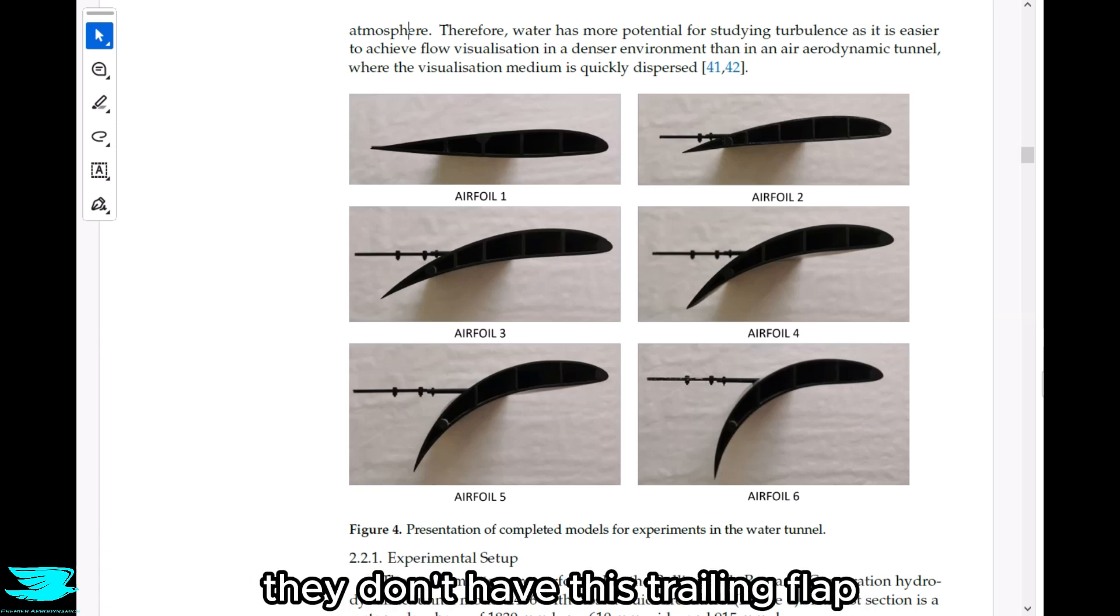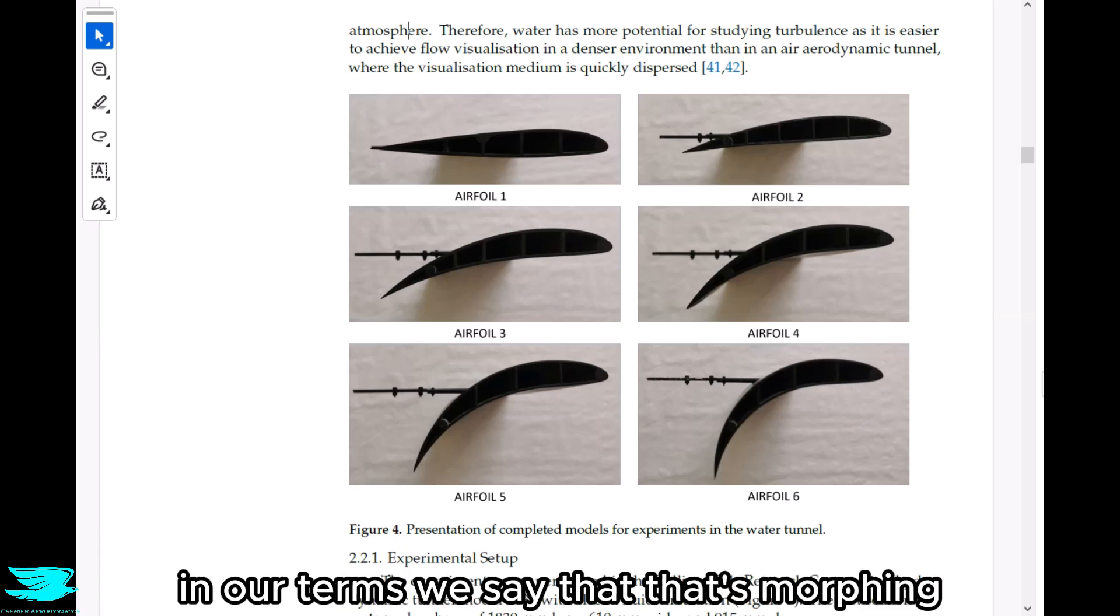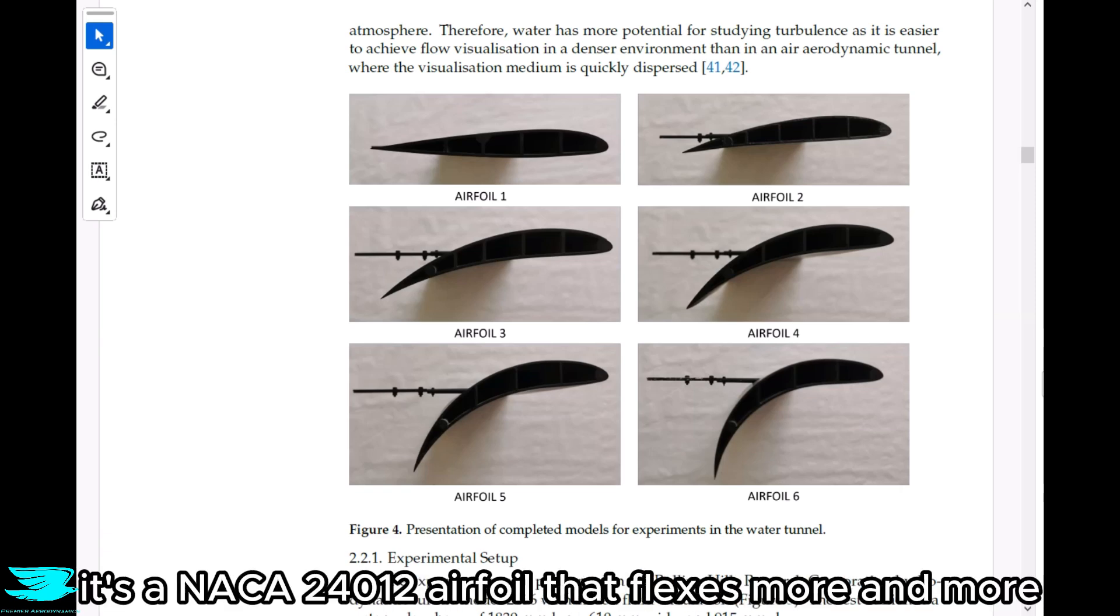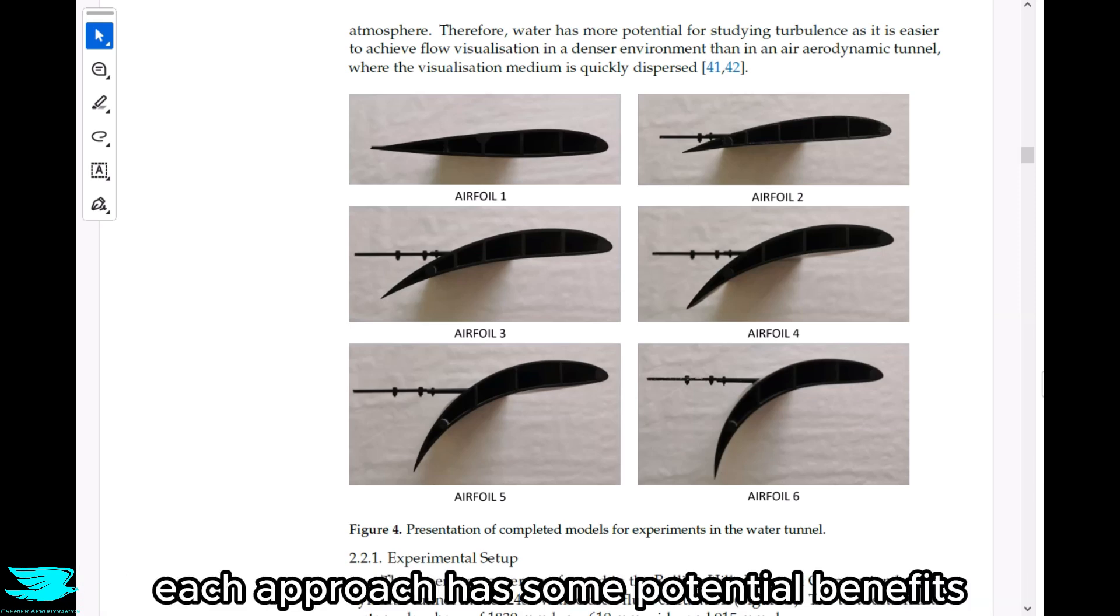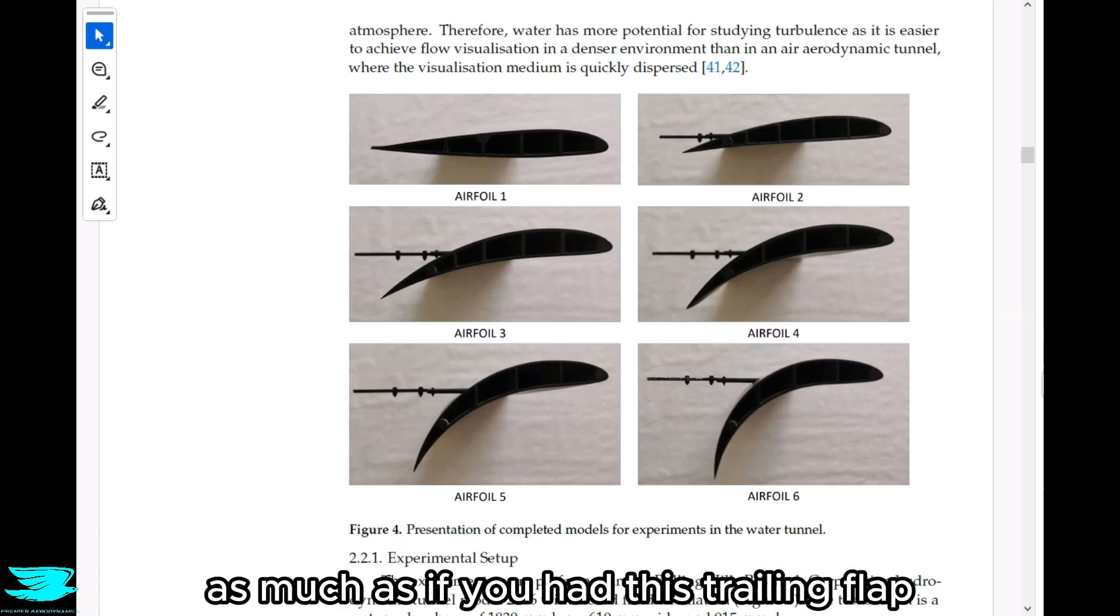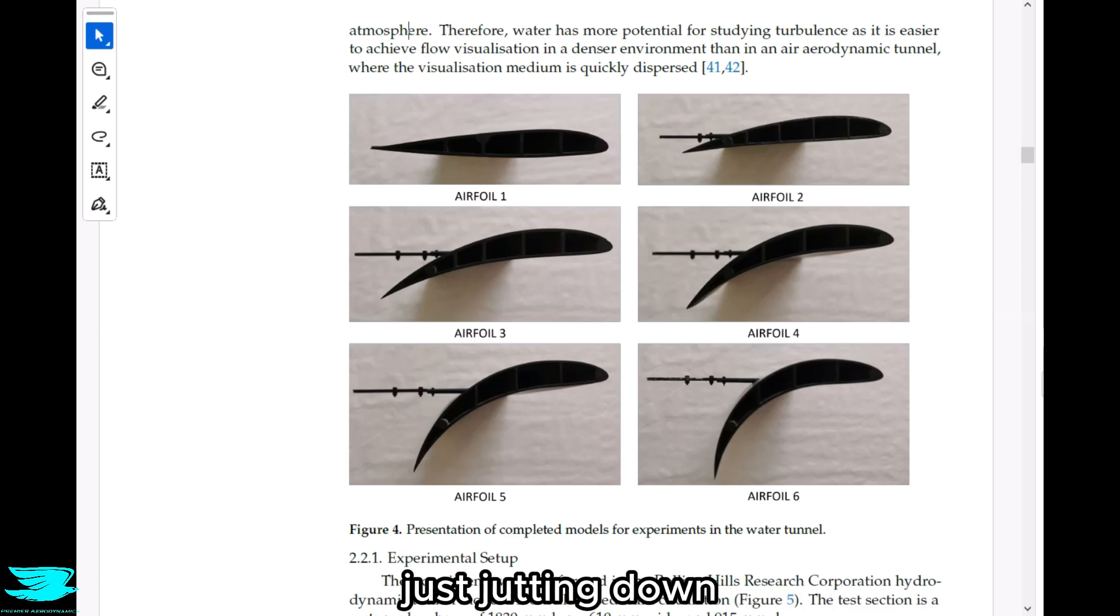But bird wings are very different. They don't have this trailing flap. They just instead flex their wings. In our terms, we say that's morphing. And in picture four here, we see an airfoil that is doing just that. It's a NACA 24-0-12 airfoil that flexes more and more. Each approach has some potential benefits. For example, with a morphing wing, you have a very continuous surface that shouldn't disturb the flow as much as if you had this trailing flap just jutting down.